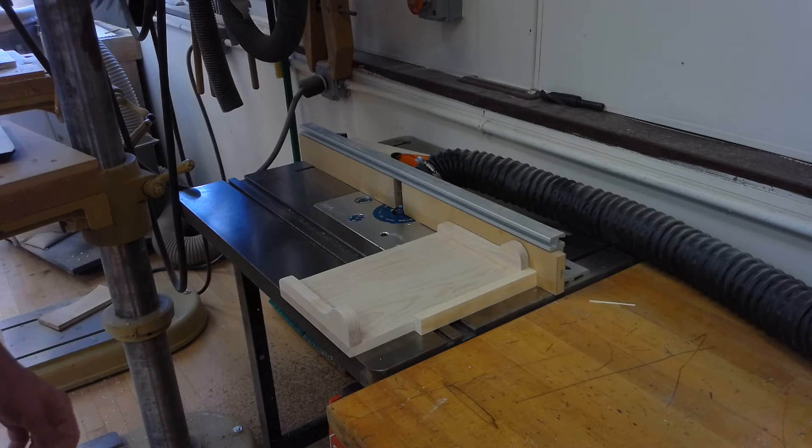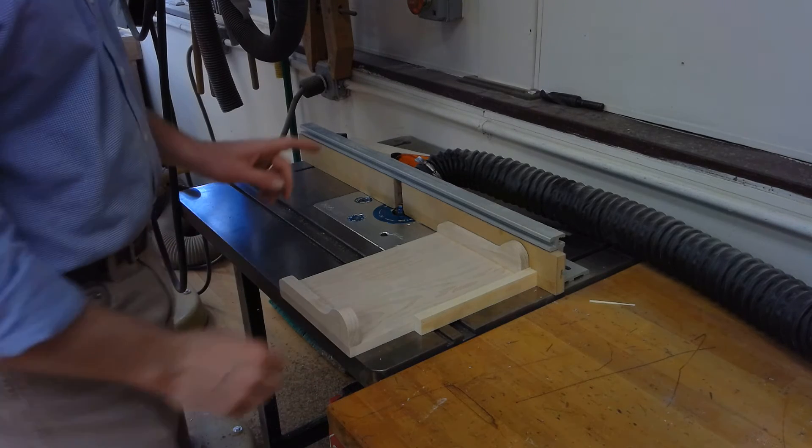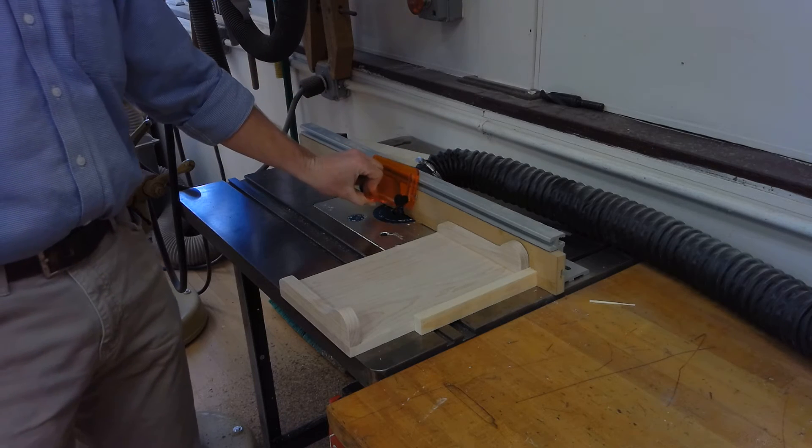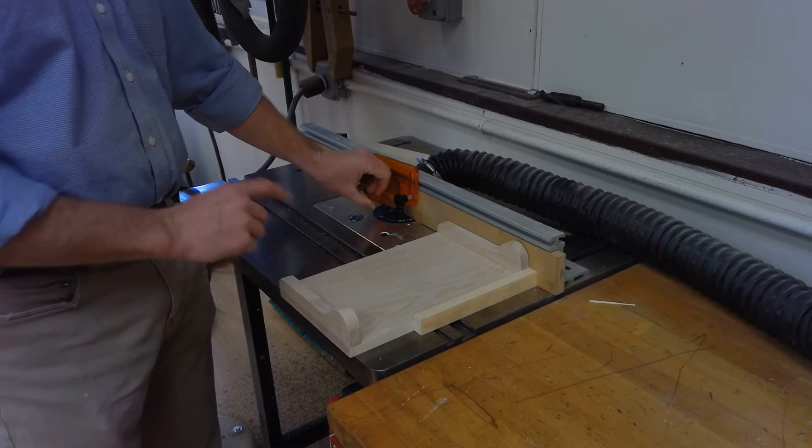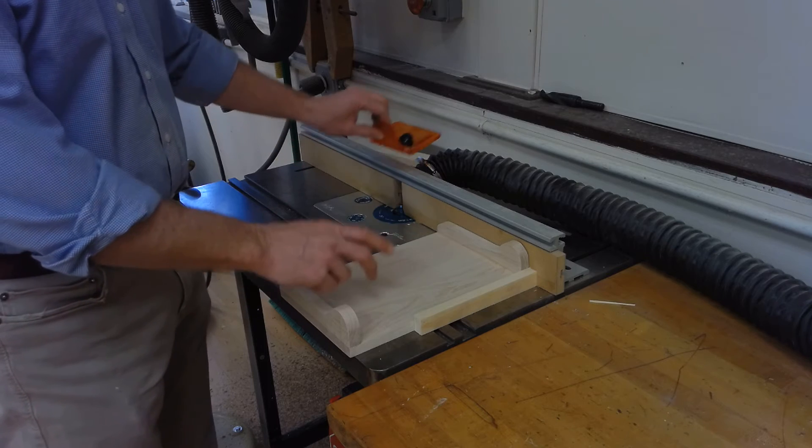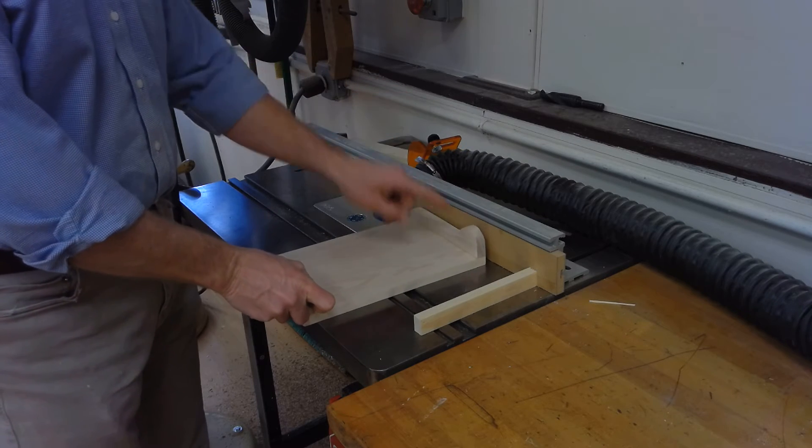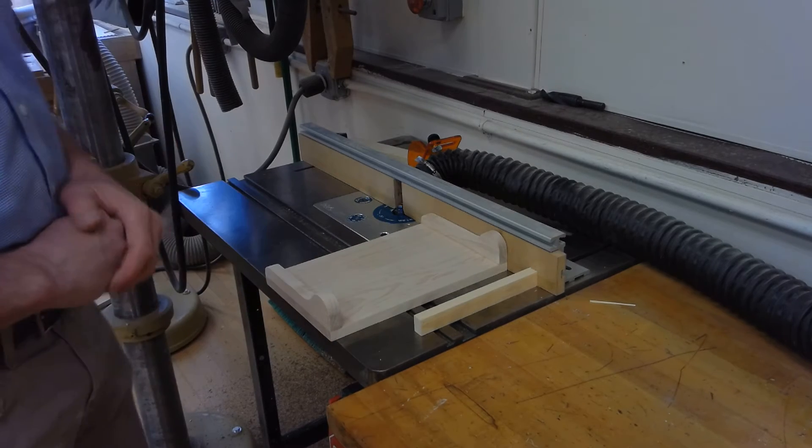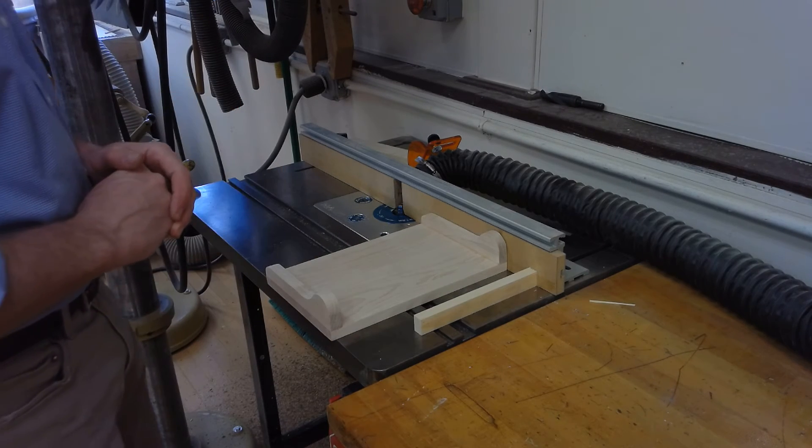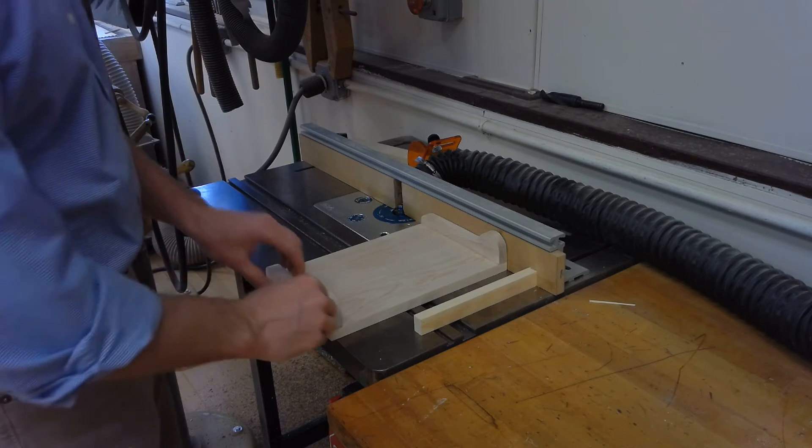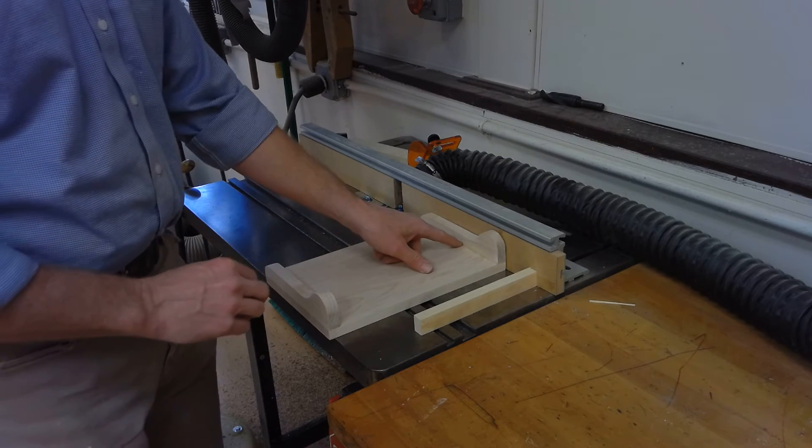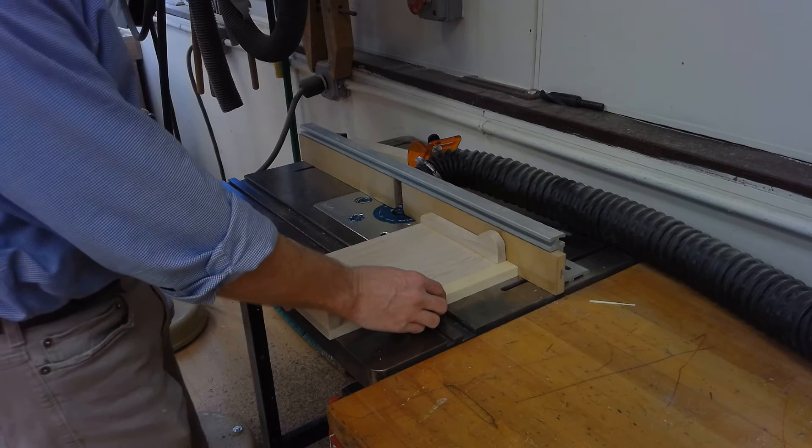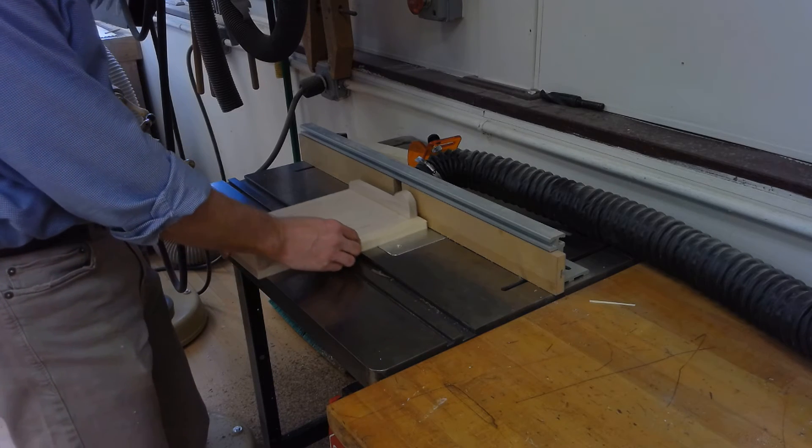Here we are at the router table. I need to point out that we need to take the guard off when we're routering the top because these things are going to get in the way. So you've got to be extra special cautious, think about where your fingers are in relation to that spinning bit. So like I said, we're always going to do end grain first. I've got my little support stick, I'm just going to go ahead and run that thing through.